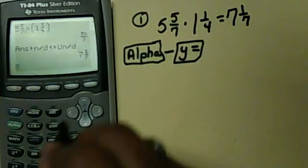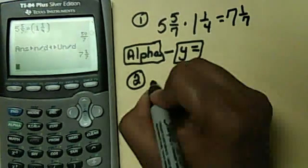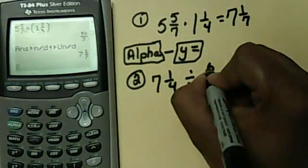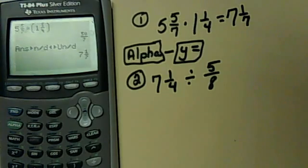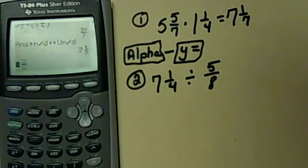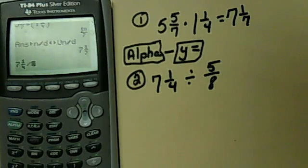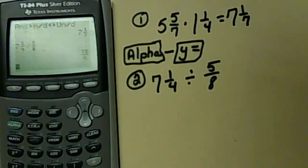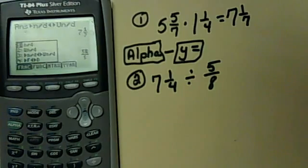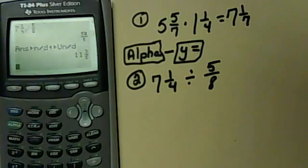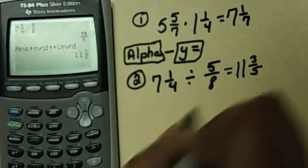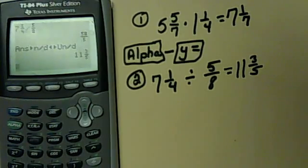Let's do another one real quick — a division problem: seven and one-fourth divided by five over eight. So a combination of mixed number and improper fraction. You're going to again go to that alpha y equals key, go to number two and fill in the blanks: seven and one over four. Then put divide — remember, you have to get out of there first — and then go back to your alpha y equals and fill in that numerator/denominator: five over eight. Hit enter, and it gives you an improper fraction. Go back to alpha y equals, hit number three, and it'll change that into a mixed number: 11 and three-fifths. It's pretty simple if you have the upgrade.